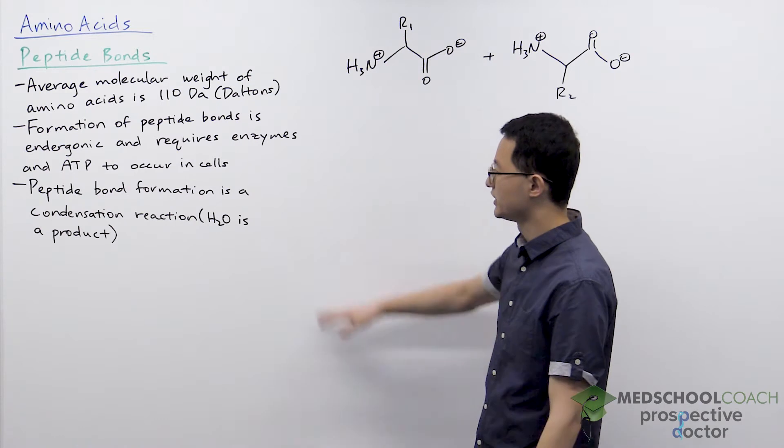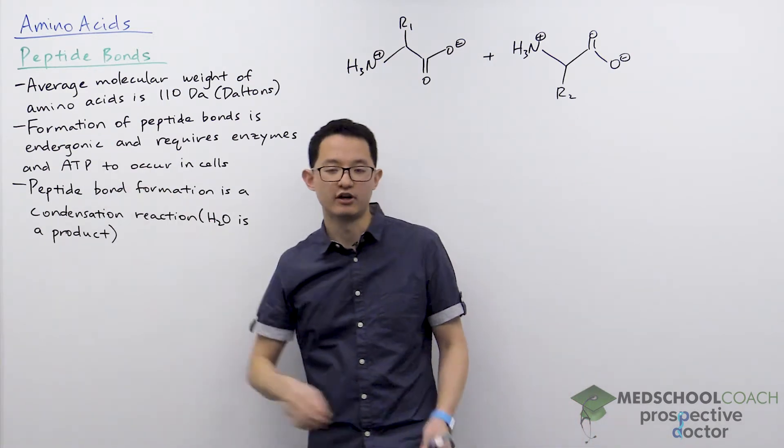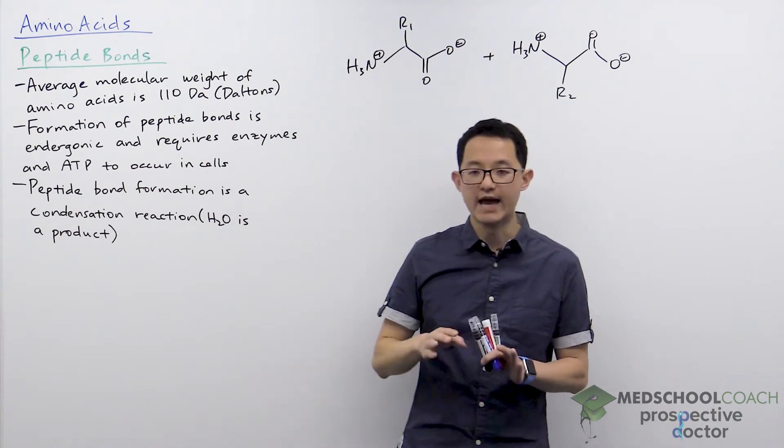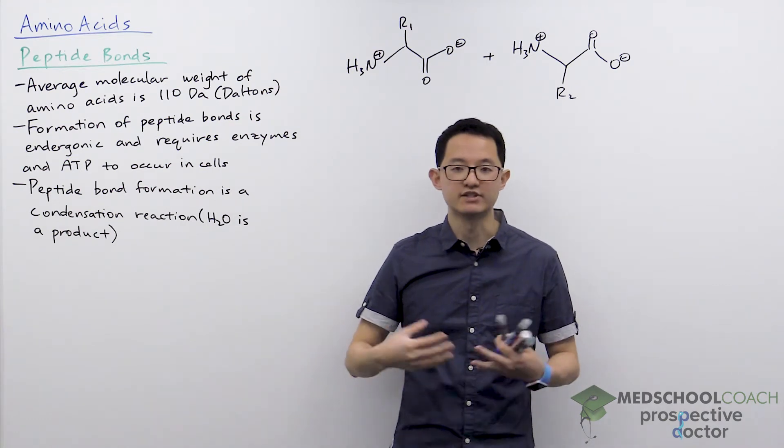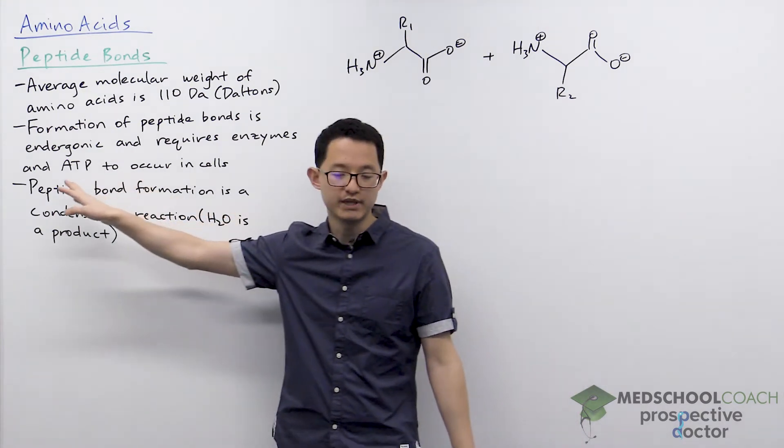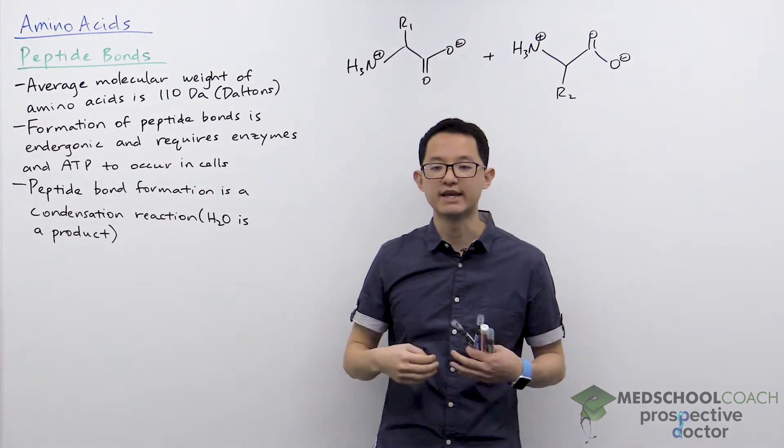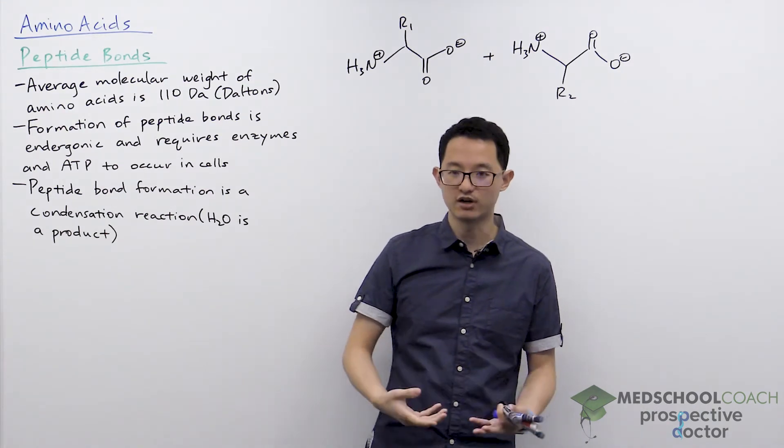In terms of forming a peptide bond, you should know that it is an endergonic reaction, so that means it is energetically unfavorable and by itself is not going to happen. That's why in cells ATP is required - ATP through reaction coupling can make the net process exergonic and favorable.